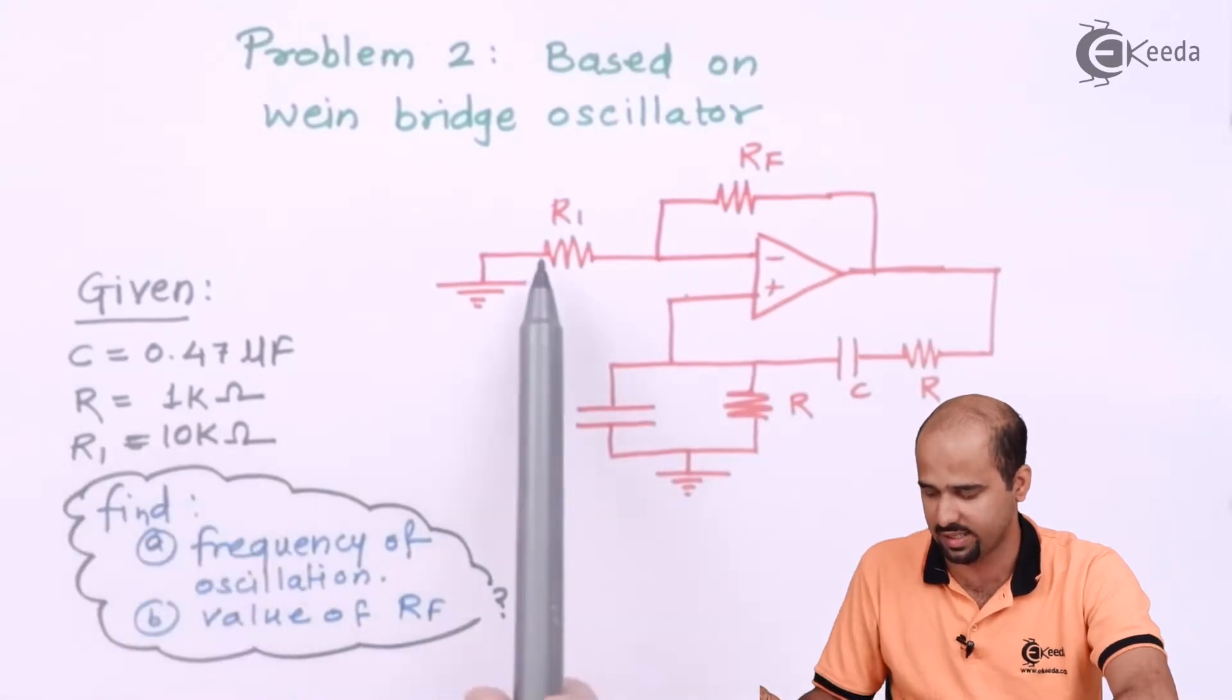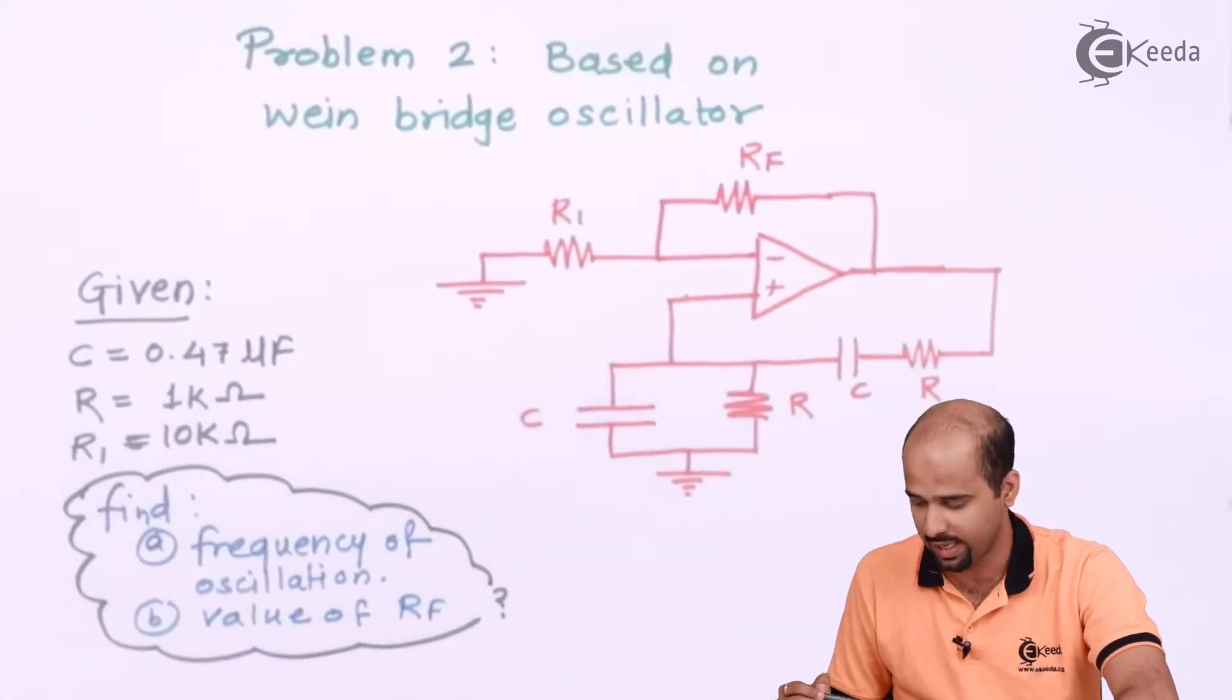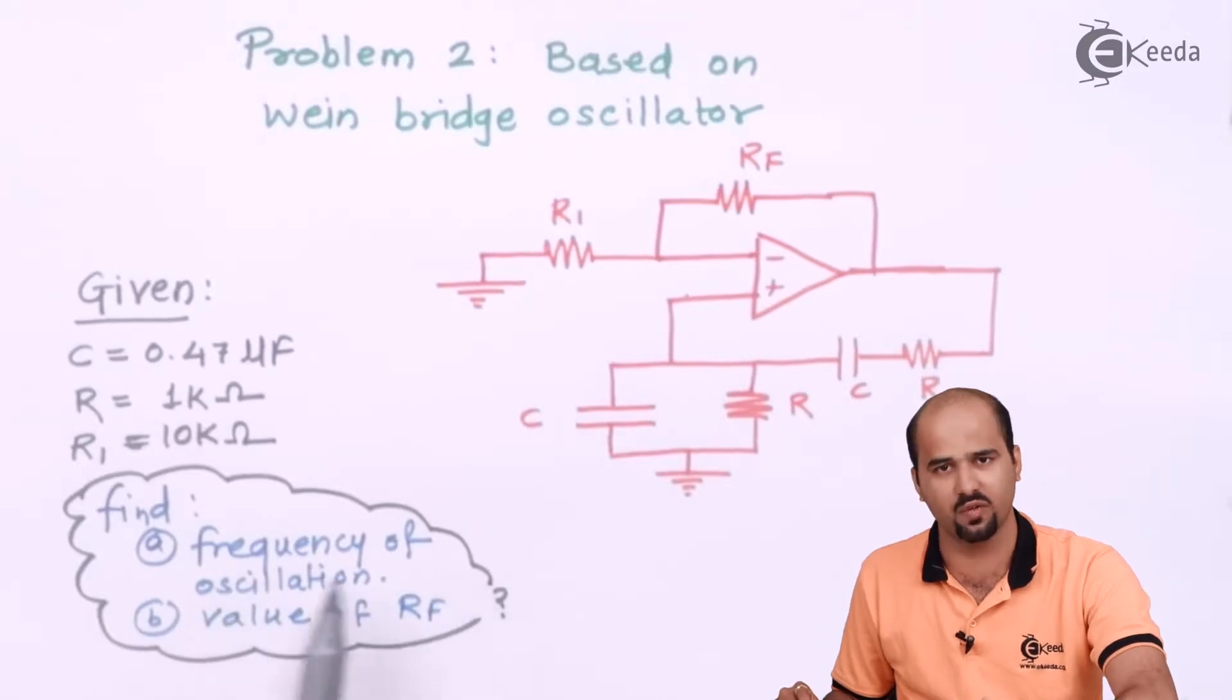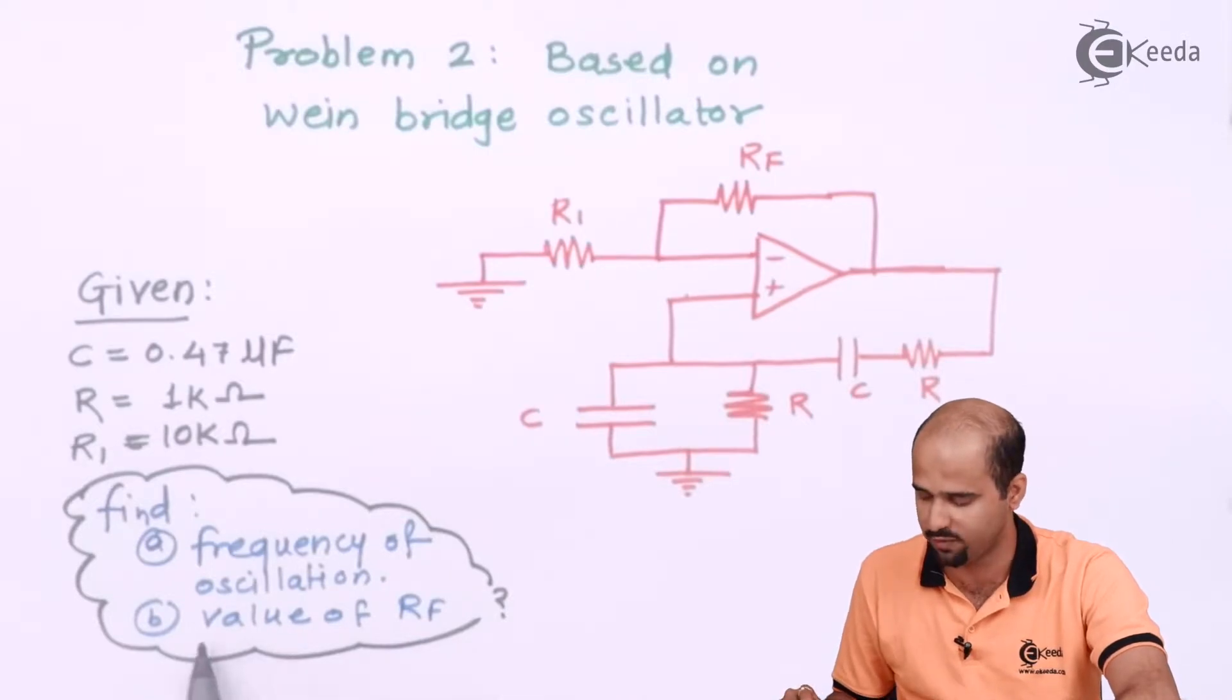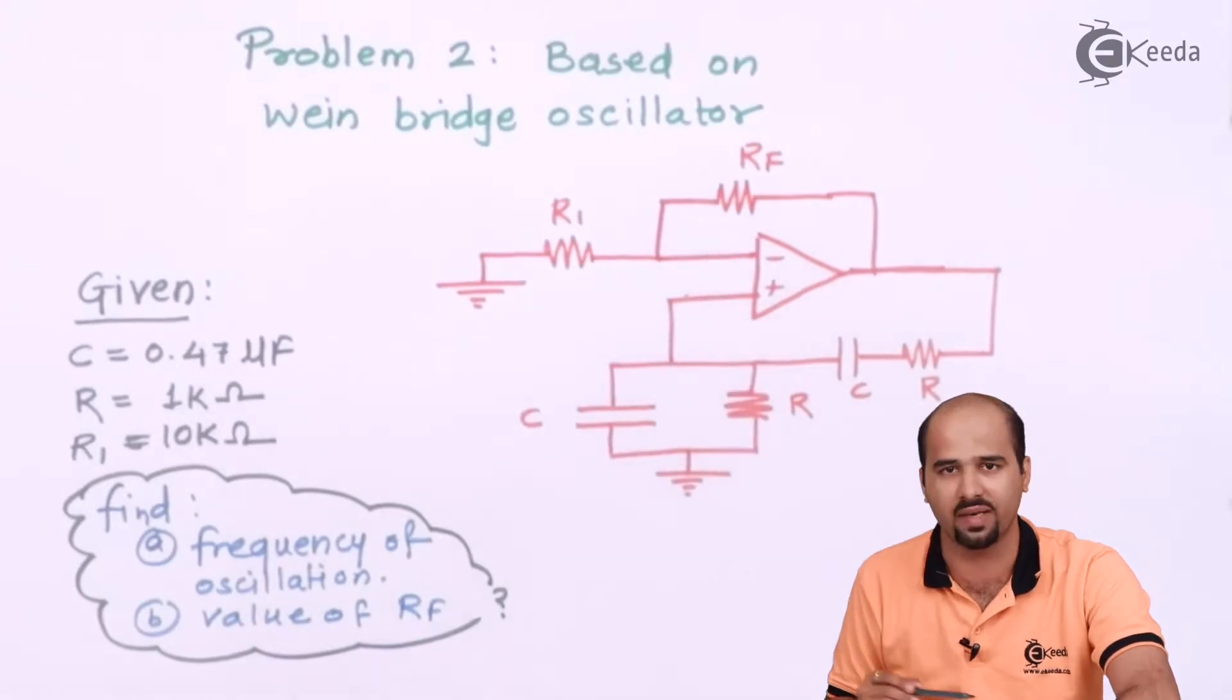R1 which is given as 10 kilo ohm, and they ask us frequency of oscillation and second is value of RF such that I will get sustained oscillation. So here this value of RF, we have to find out what is the gain and on the basis of gain what will be the value of RF.